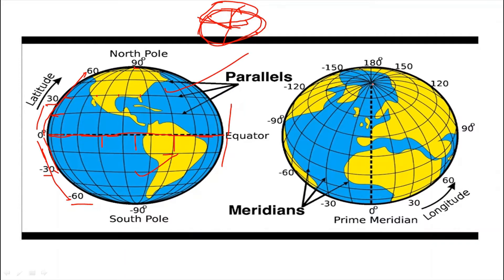Meridians are also imaginary lines. The word 'meridian' means mid-day, or the sun's highest position in the sky. Meridians are semicircles — they are not full circles. They cut across the equator at a right angle, meaning all meridians intersect the equator at 90 degrees. Unlike parallels, all meridians are of equal length. They are measured from 0 degrees to 180 degrees west and 0 degrees to 180 degrees east, and 180 degrees is a common meridian.